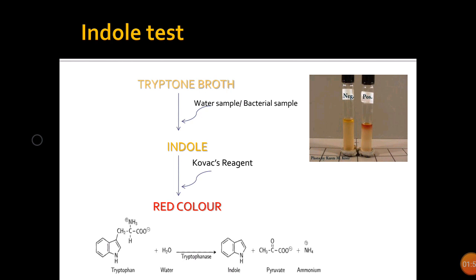Tryptophan is hydrolyzed by tryptophanase to produce three possible end products, and indole is one of them. When indole is produced, its production is detected by Kovac's reagent, which contains para-dimethylaminobenzaldehyde. It reacts with indole to produce a red-colored compound. The red color indicates the production of indole by the microorganism present in the water sample. The reaction shows how tryptophan is converted into indole by the enzyme tryptophanase.